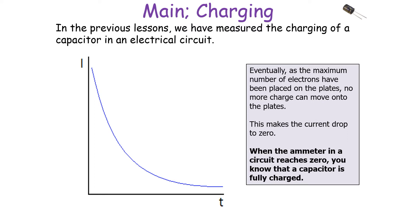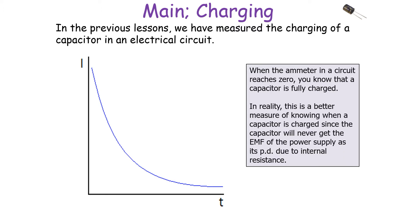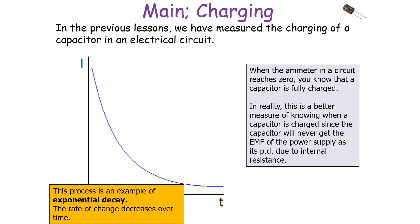Eventually, as electrons are placed on the plate, no more charge can move onto the plate, so there is no more movement of charge in the circuit — this makes the current drop to zero. When the ammeter in the circuit reaches zero, the capacitor is fully charged. In reality, this is a better measure of knowing when a capacitor is charged, since in the real world the capacitor will never reach the EMF of the power supply as its potential difference due to internal resistance. This process of current change with time is also an exponential decay.